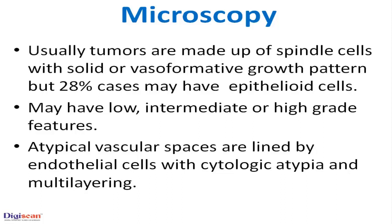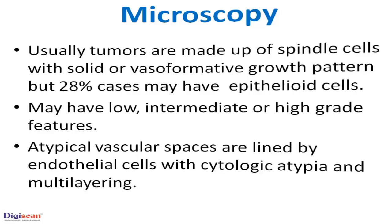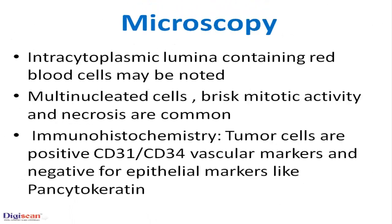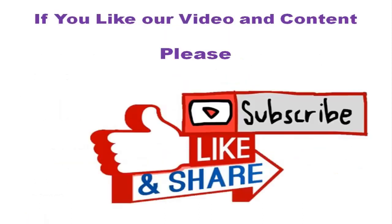Atypical vascular spaces are lined by endothelial cells with cytologic atypia and multilayering. Intracytoplasmic lumina containing red blood cells may be noted. Multinucleated cells, brisk mitotic activity, and necrosis are common. On immunohistochemistry, tumor cells are positive for CD31 and CD34, which are vascular markers, and negative for epithelial markers like pancytokeratin. Thank you.